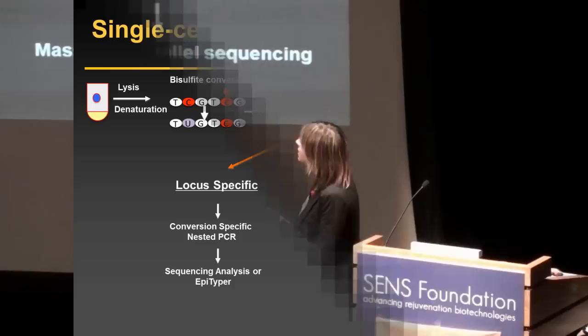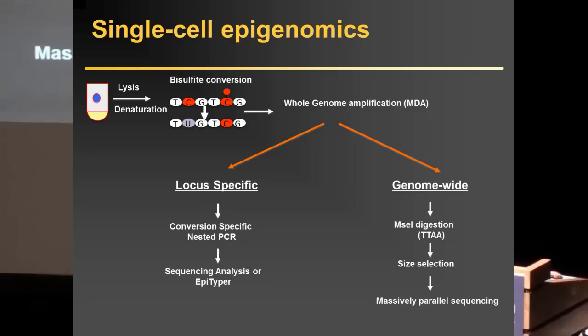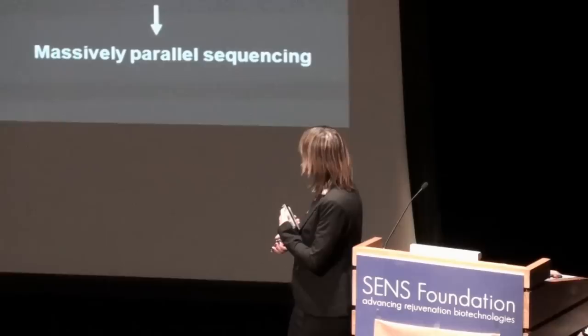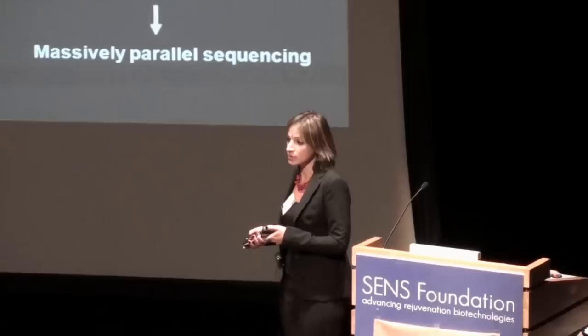We isolate single cells using a mouth capillary approach, denature the DNA from single cells — from 5 pg of DNA — then perform bisulfite treatment followed by whole-genome amplification of the bisulfite-treated DNA. We can then follow two approaches: the locus-specific approach, where we target promoter regions of interest using conversion-specific nested PCR primers followed by sequencing analysis or Epityper; or the genome-wide method, where we target a portion of the genome and perform next-generation sequencing.